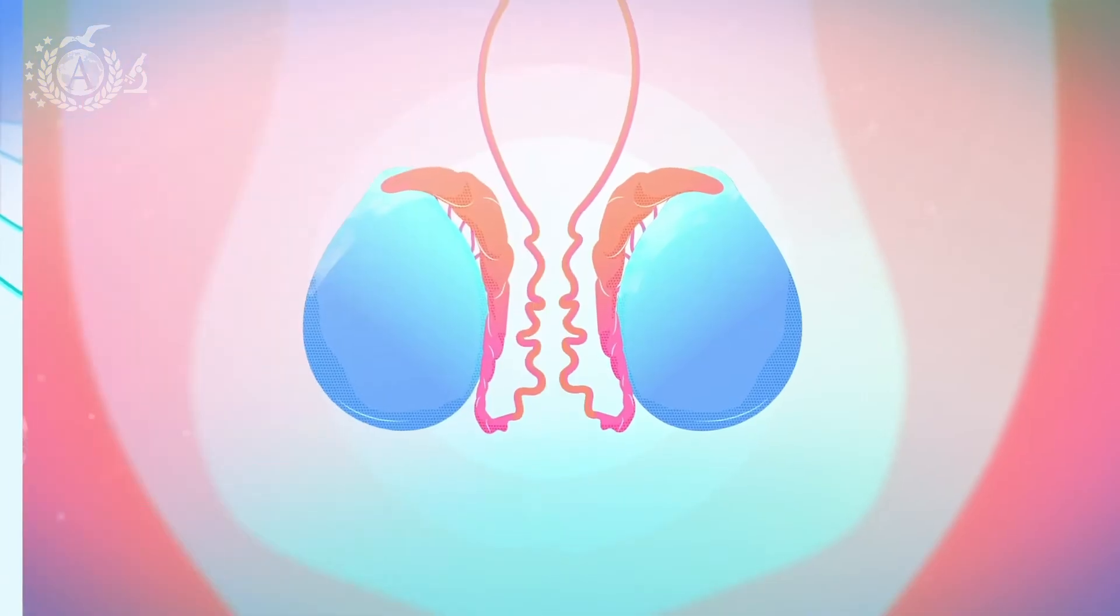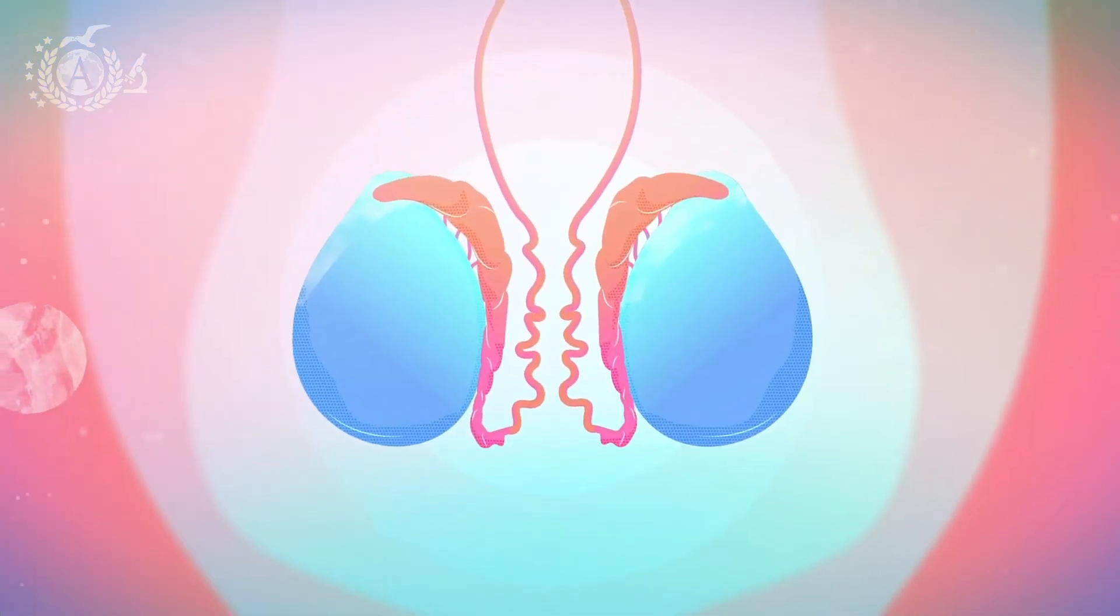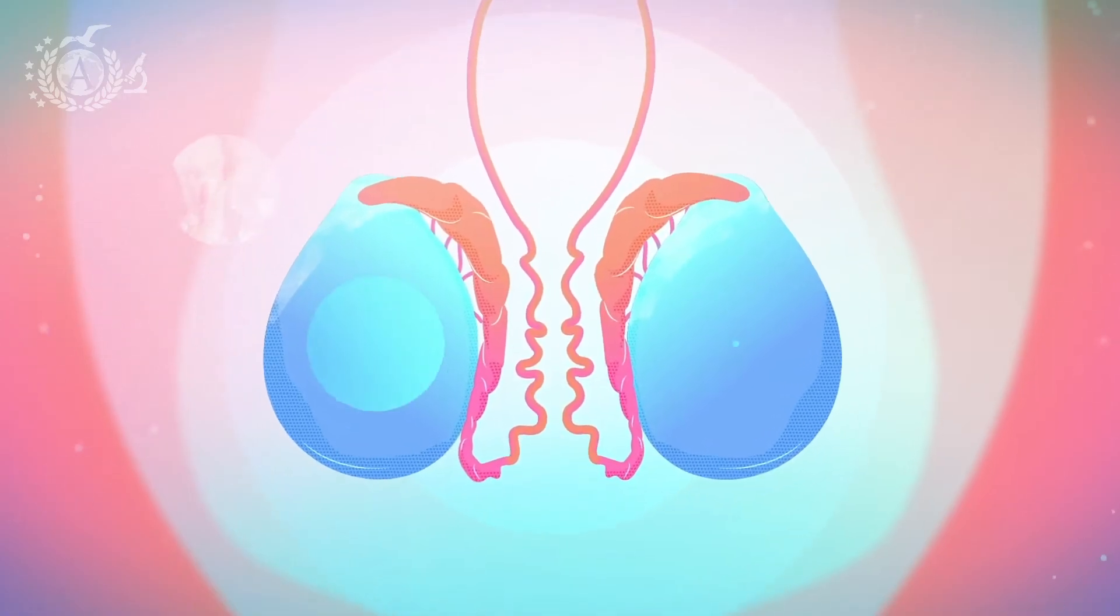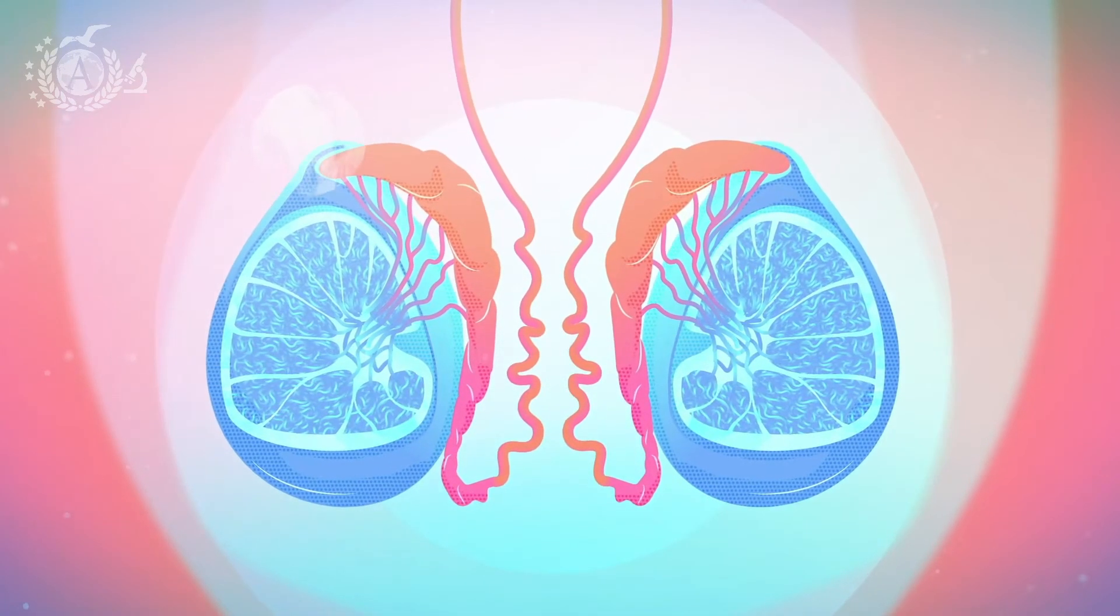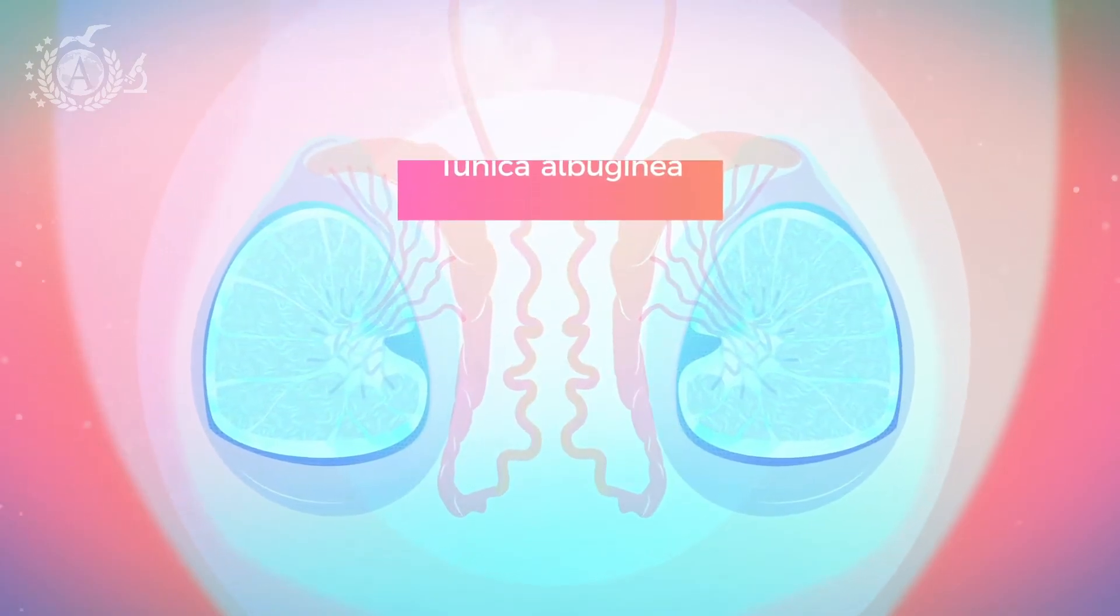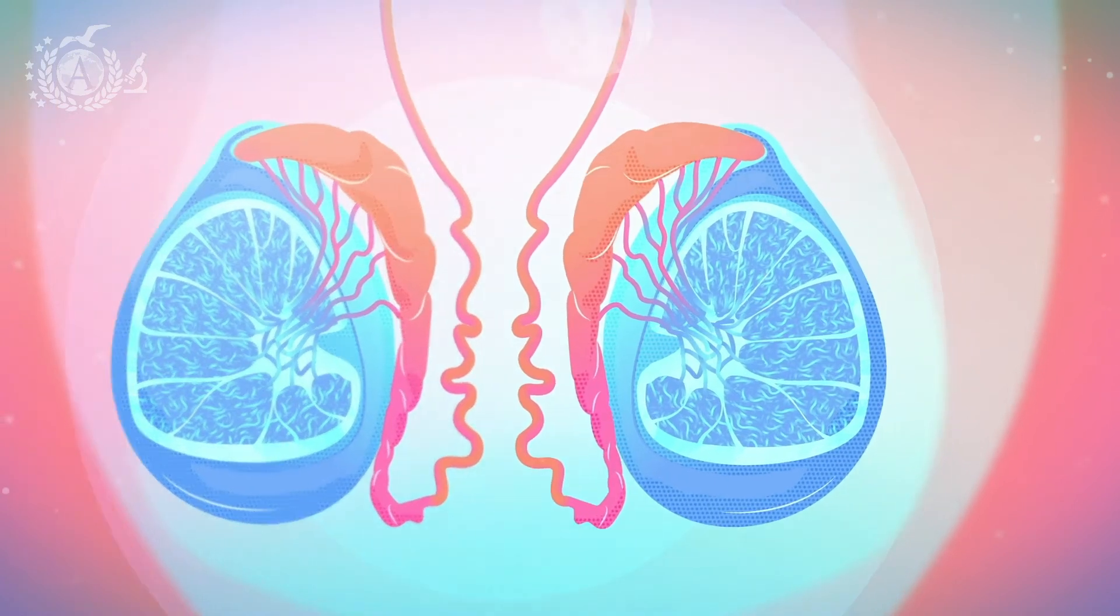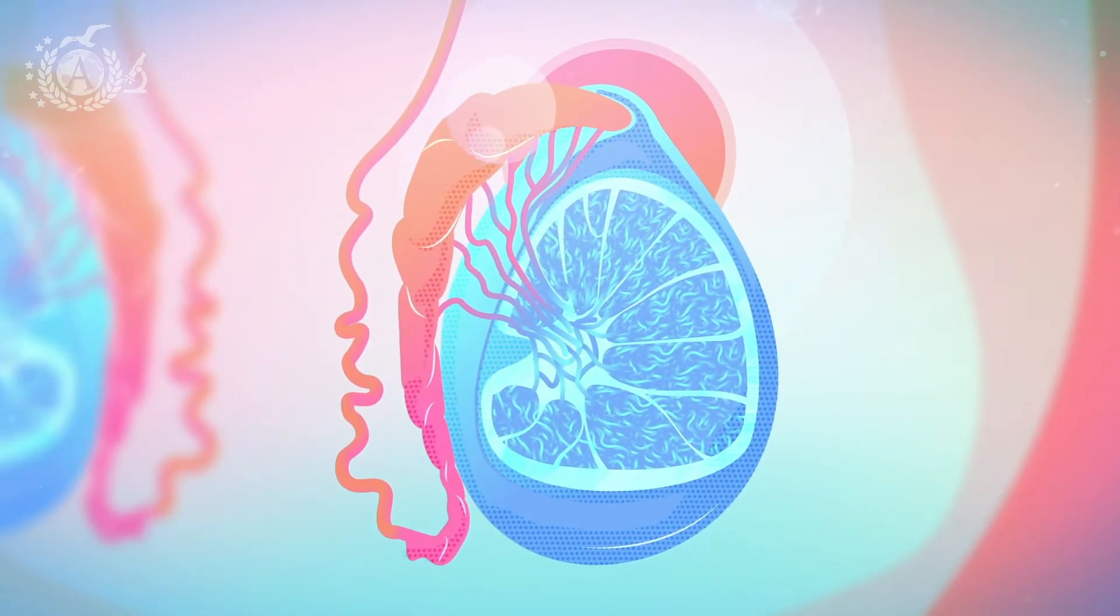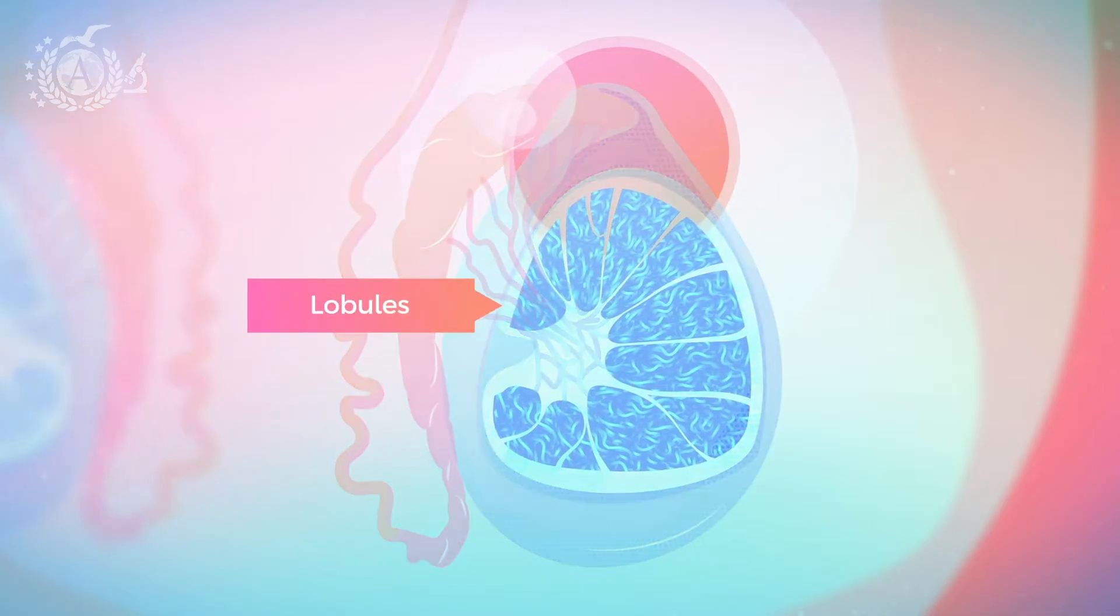Let's begin by analyzing the testicle. From a macroscopic point of view, it is a full ovoid organ, enveloped by a fibrous connective covering, the tunica albuginea, the capsule. From this, a series of connective bundles branch off within the parenchyma, dividing it into 250 pyramid-shaped structures, the lobules, the testicular lodge.